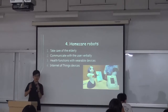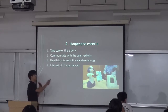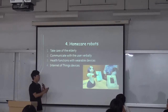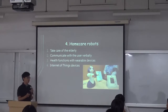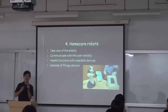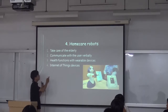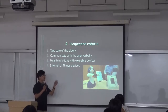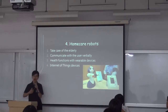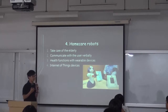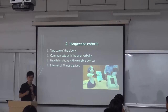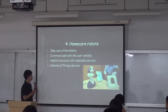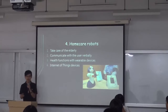They can communicate with the user verbally, so you can talk to this kind of robot and they can give you a reply. Like you can ask them what time it is, or what's my blood pressure or my heart rate, because they have health functions with wearable devices like a smartwatch. The robots will know your heart rate or blood pressure, so they can communicate with the ambulance if you have any emergency situation.